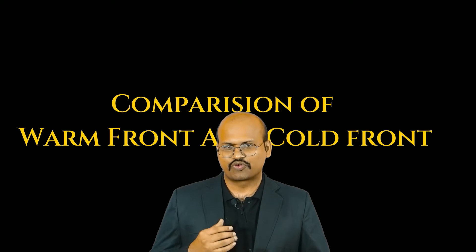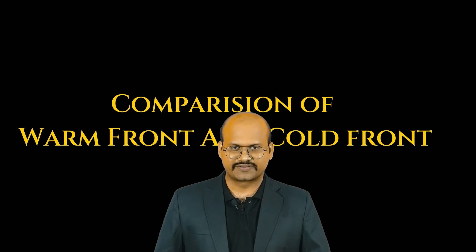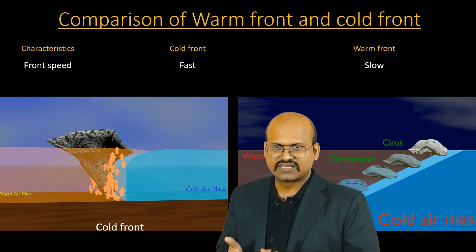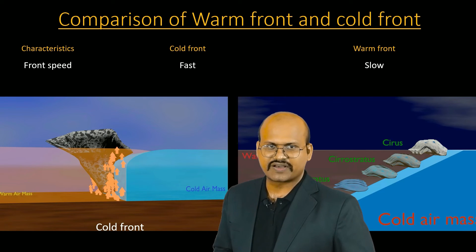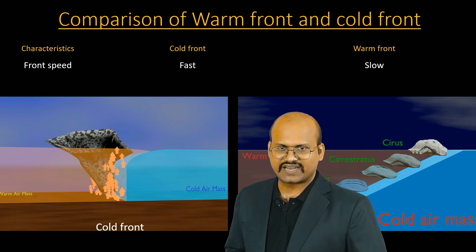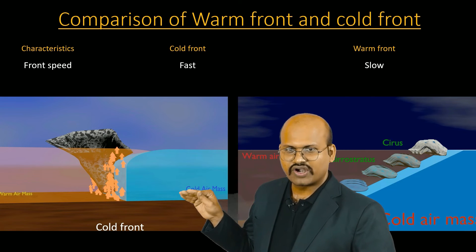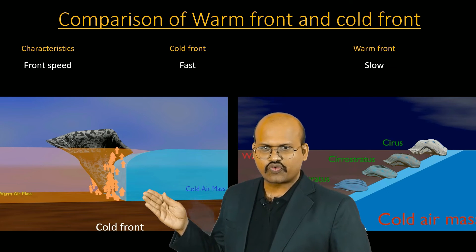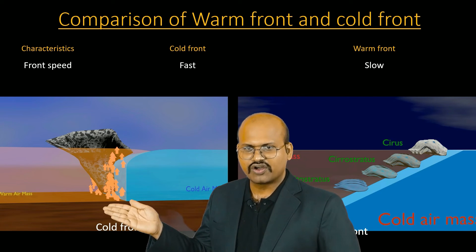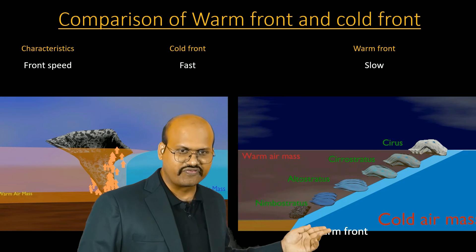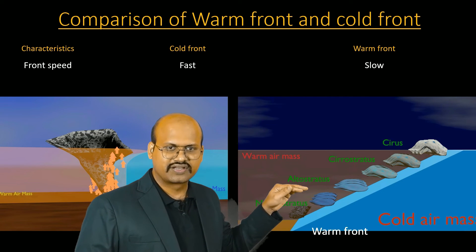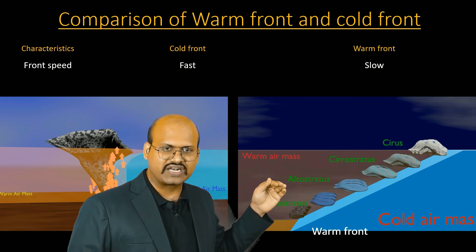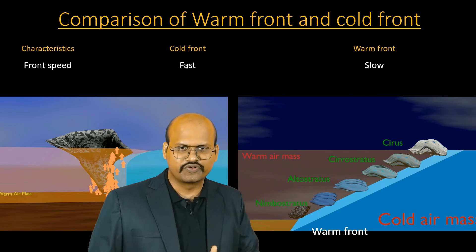Now let's do a quick comparison of warm front and cold fronts. The first characteristic is speed of the front. The cold front is very fast compared to the warm front which is slow. The reason is that in the cold front, the cold air is moving, which is heavier compared to the warm air, so it quickly uplifts the warm air. At the warm front, the warm air is lighter compared to cold air, so it moves very slowly.